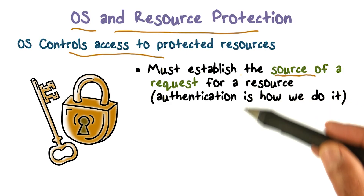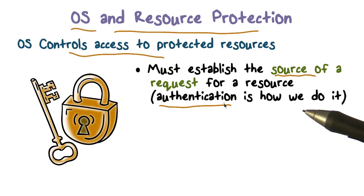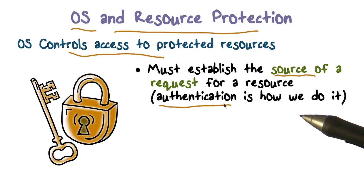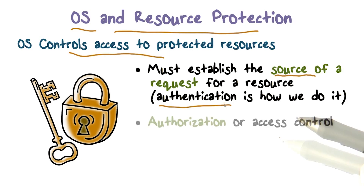The 'who' part is typically answered by this thing we call authentication — we're going to talk more about it in a future lesson. But authentication essentially establishes on whose behalf a certain application or process is running, and so that's the user who's making the request.